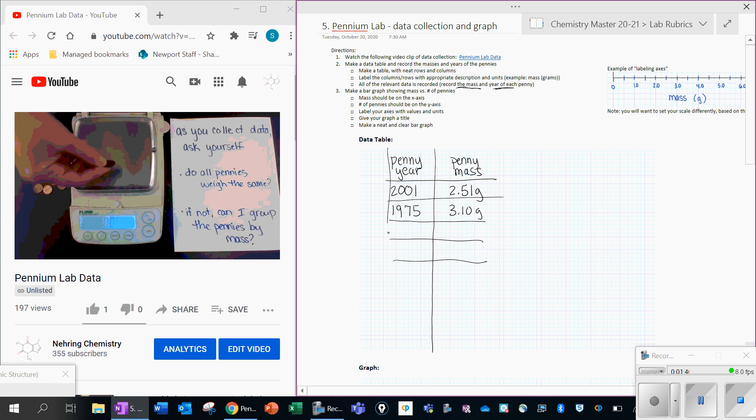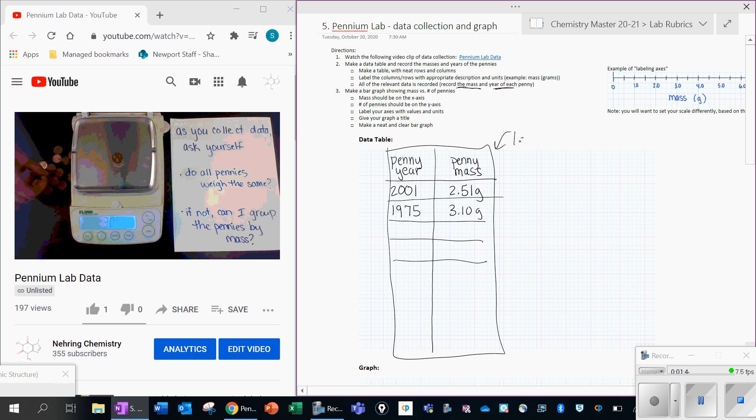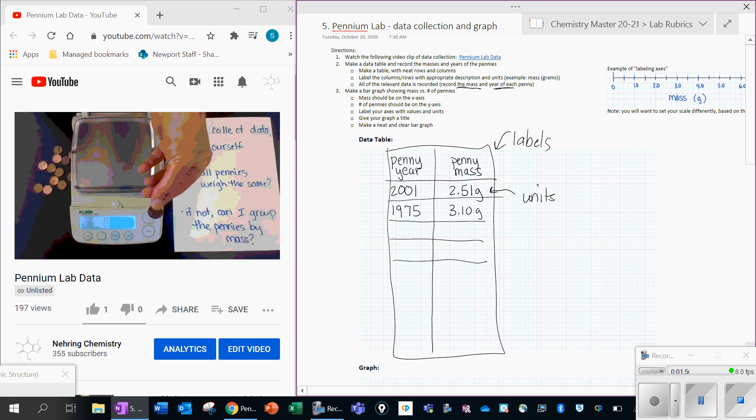So you make it in this table. Make sure you have clear labels here at the top. And then make sure you have units by your mass reading. Okay.